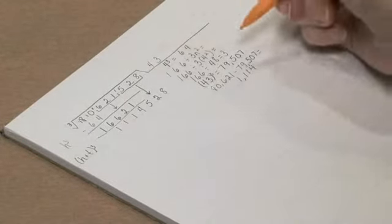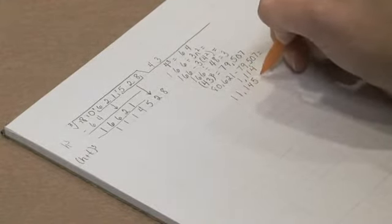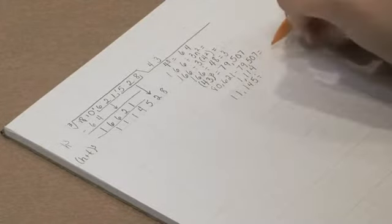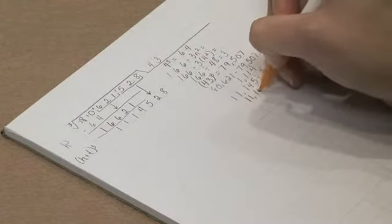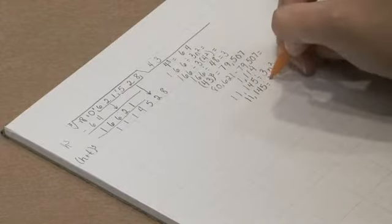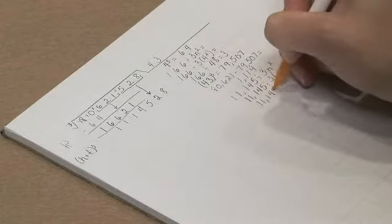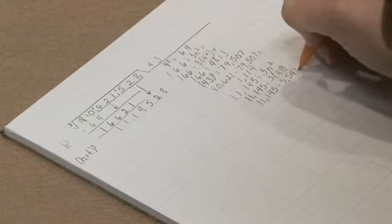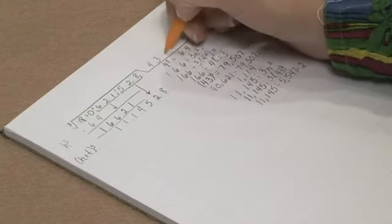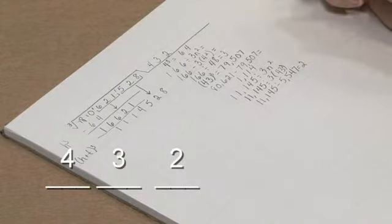And then I will be taking 11,145 and dividing that by 3n squared. So this time I'm dividing by 3 times 43 squared, and that's going to be 5,547. And so my trial root for the units will be 2, after I divide 11,145 divided by 5,547.